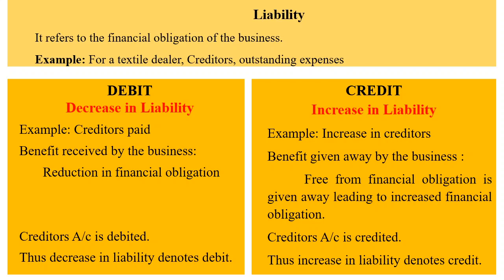Credit denotes increase in liability. Example: increase in creditors. The benefit given away by the business is freedom from financial obligation, which is given away leading to increased financial obligation, and so the creditors' account is credited. Thus, increase in liability denotes credit.